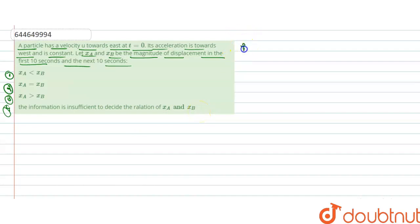So firstly, we write down the solution and let's start. Velocity u towards east at t equals 0.